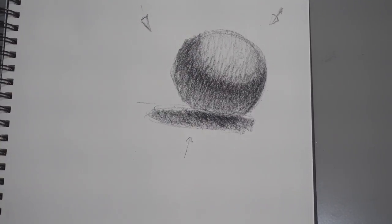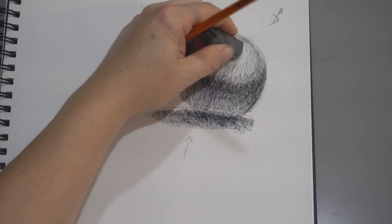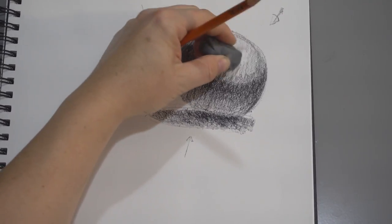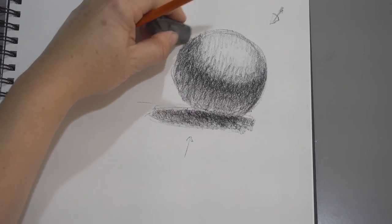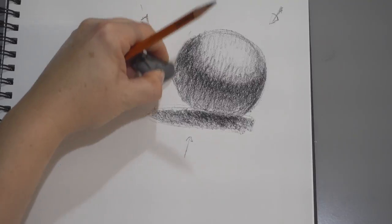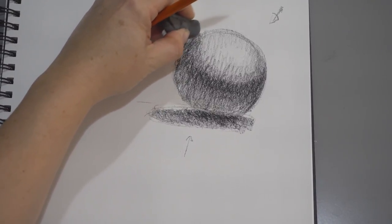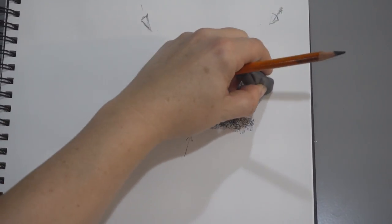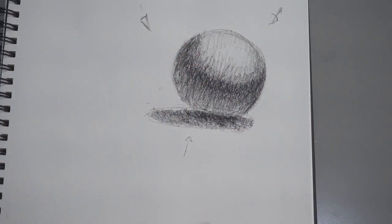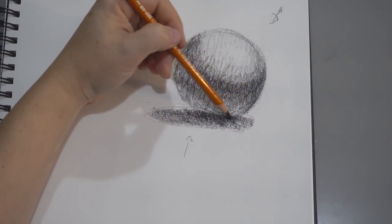Now what I'm going to do is take my eraser, get that kind of erase out where that highlight needs to be, and I'm going to clean up some of the edge here where it's not quite round. I'm going to continue to work on it.